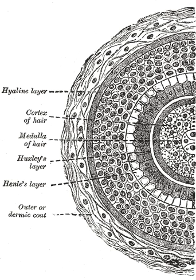The shaft is the hard filamentous part that extends above the skin surface. A cross-section of the hair shaft may be divided roughly into three zones. Hair fibers have a structure consisting of several layers, starting from the outside: the cuticle, which consists of several layers of flat, thin cells laid out overlapping one another as roof shingles; the cortex, which contains the keratin bundles in cell structures that remain roughly rod-like; and the medulla, a disorganized and open area at the fiber center.